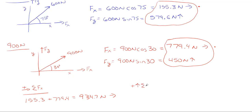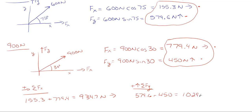Repeating the process for the y direction, summing forces vertically and taking up as positive and down as negative — we only have two forces and they're both upward, so they add together: 579.6 plus 450, which ends up being 1029.6 newtons in the upward direction.